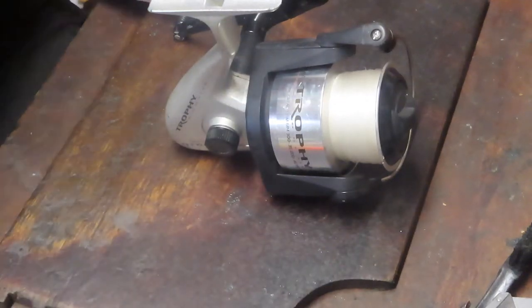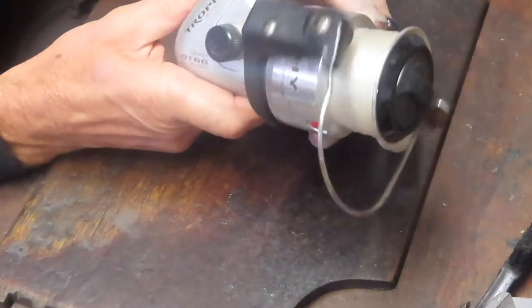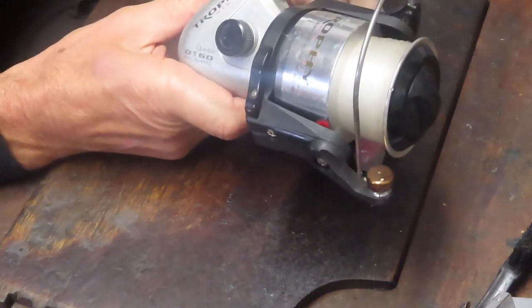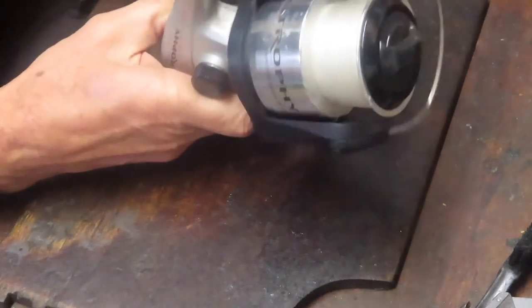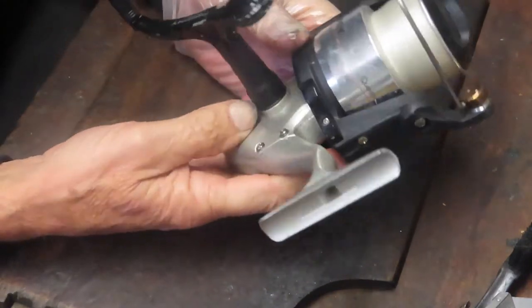Hi, this is Dennis with Second Chance Tackle. Today I'm going to be working on a very big saltwater reel. It's the Quantum Trophy, the QT60, single ball bearing reel made for surf casting, saltwater, and deep lake environments like the Great Lakes.